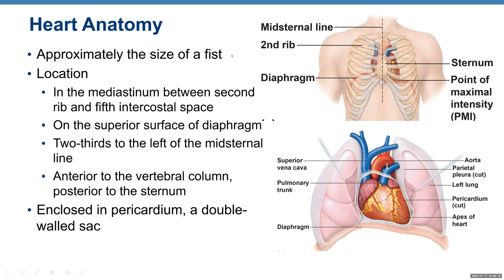You can see on this diagram the location of the heart — slightly to the left, posterior to the sternum. Here's your first rib, that's the second rib, and right here is your fifth intercostal space. The inferior part of the heart rests on the superior surface of the diaphragm.